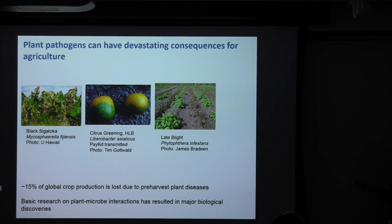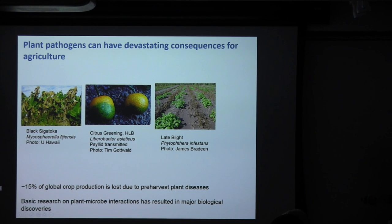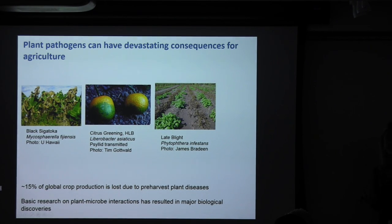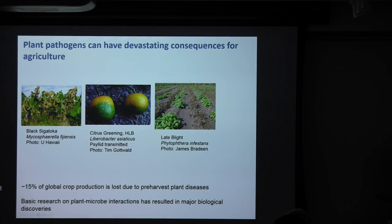This is an important emerging disease within the U.S. There are also longstanding diseases that still retain importance, like late blight of potato and tomato, caused by the oomycete Phytophthora infestans. Here you can see the importance of genetic resistance, where one row of potato possesses an immune receptor that can recognize the pathogen, and another row that lacks the corresponding immune receptor is decimated by the disease. The issue is that some immune receptors can be rapidly overcome by the pathogen population.